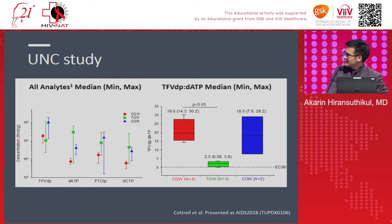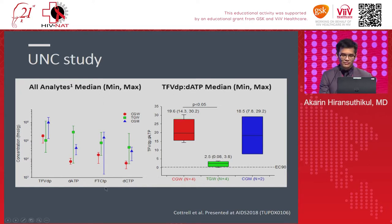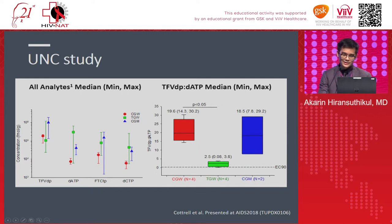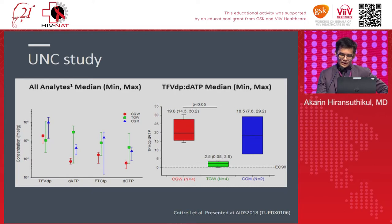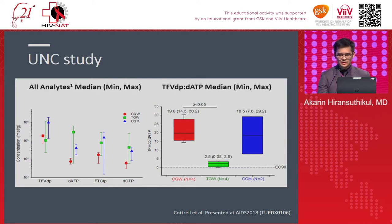They measured four things: tenofovir diphosphate, emtricitabine diphosphate, and their competing nucleotides — dATP as the competing nucleotide for TFV, and dCTP for FTC. Participants were virologically suppressed HIV-infected adults on a Truvada-containing regimen. Three cohorts: four cisgender women, four transgender women, and two cisgender men, with samples from rectal biopsy. The four transgender women each had variable hormone regimens — some oral estrogen, some injectable estrogen, some medroxyprogesterone — again emphasizing the many regimens in use.